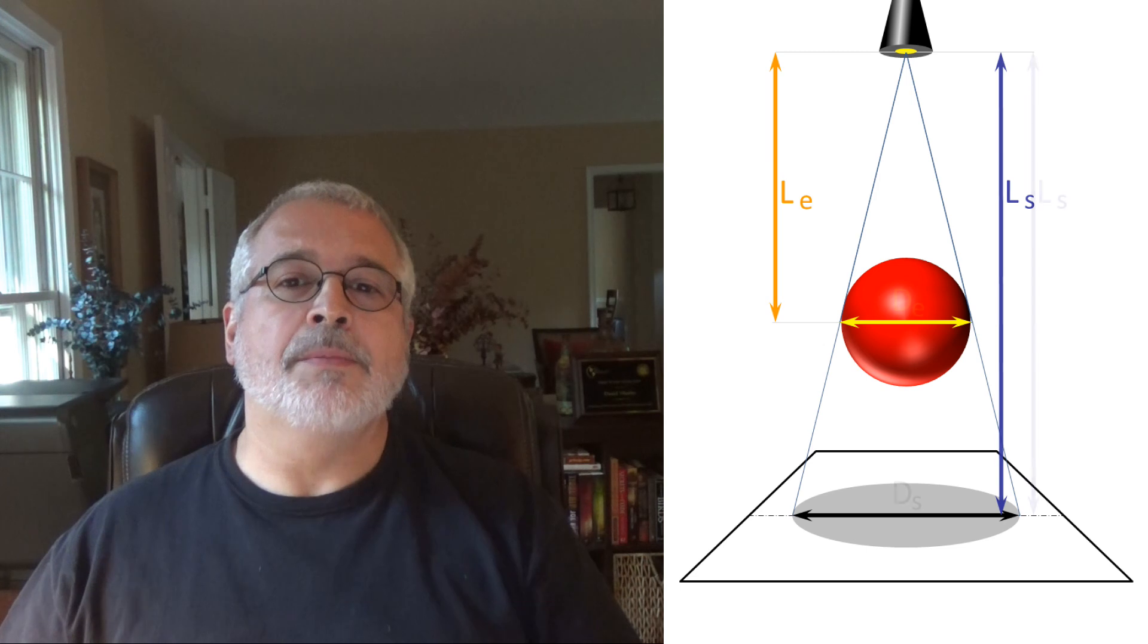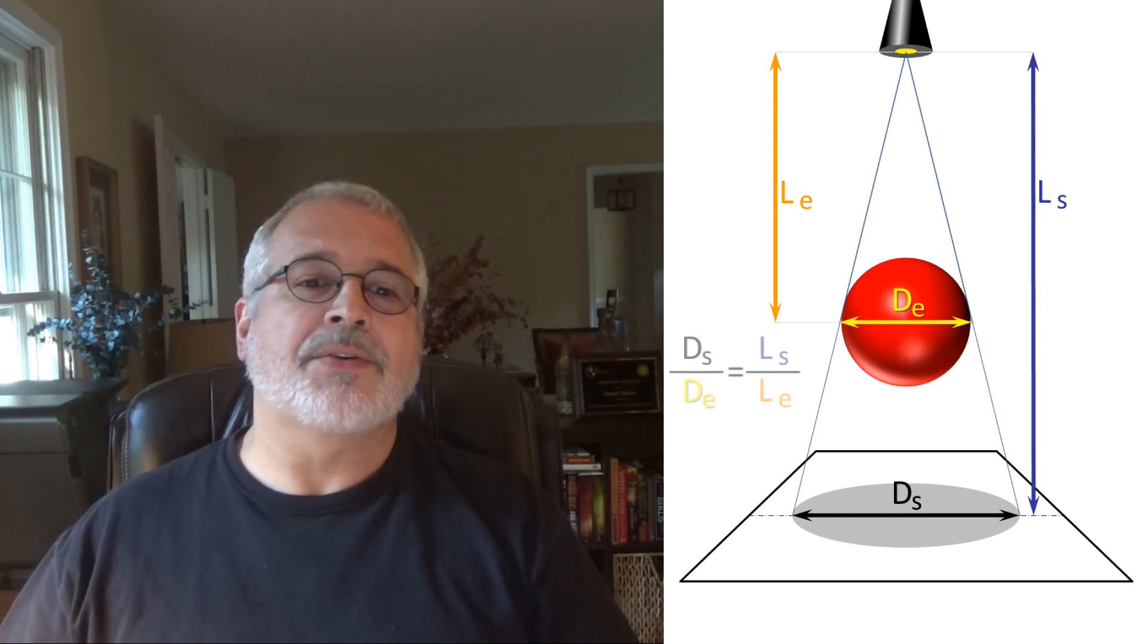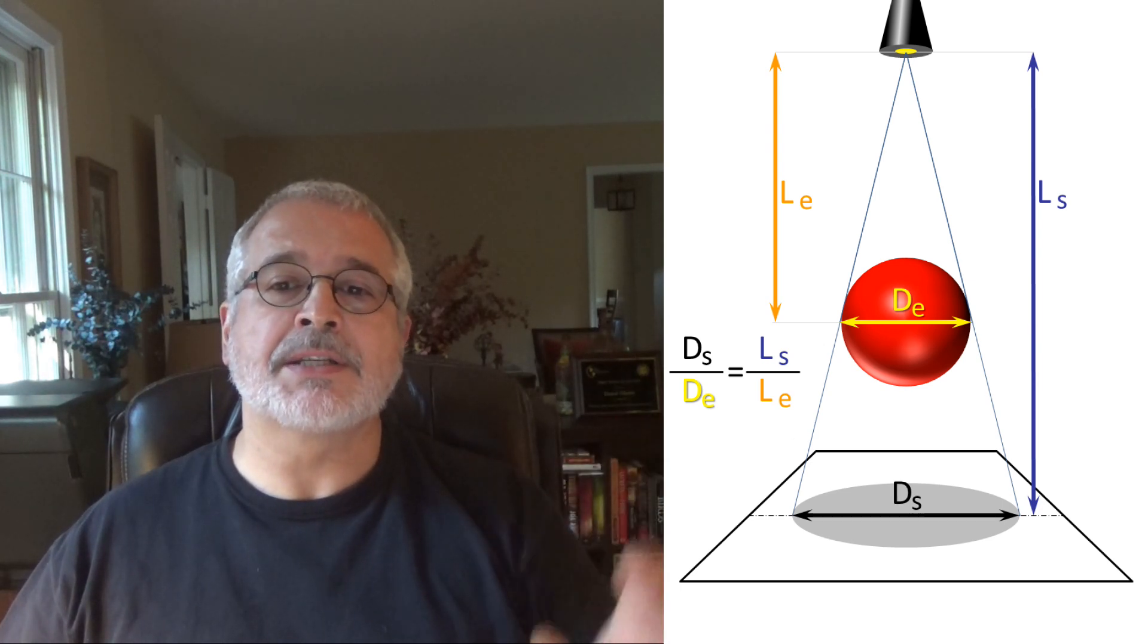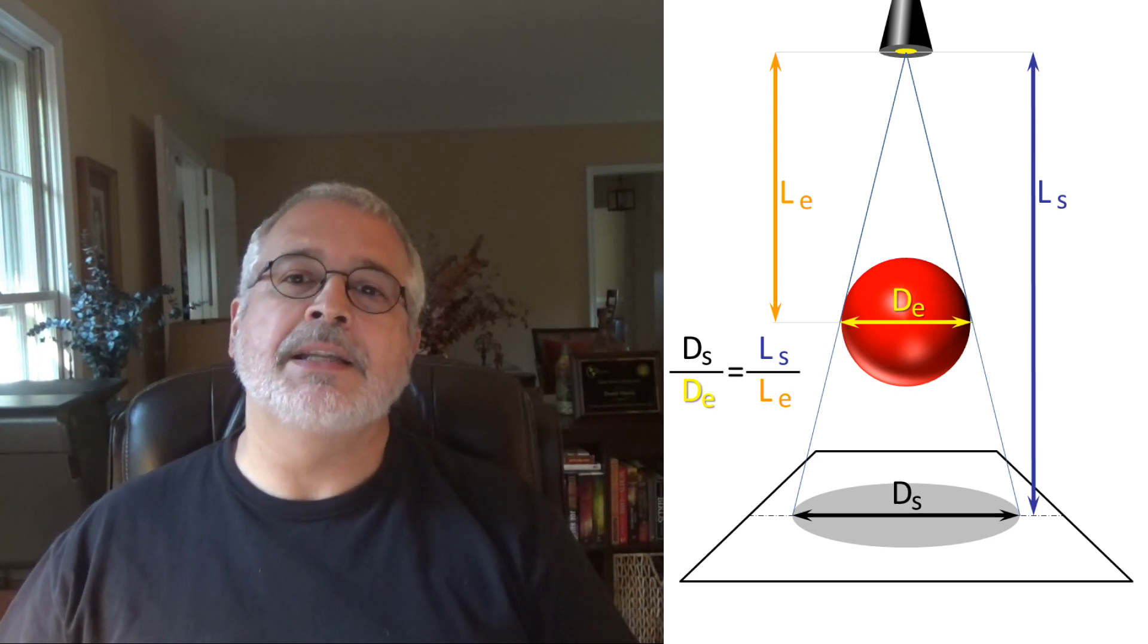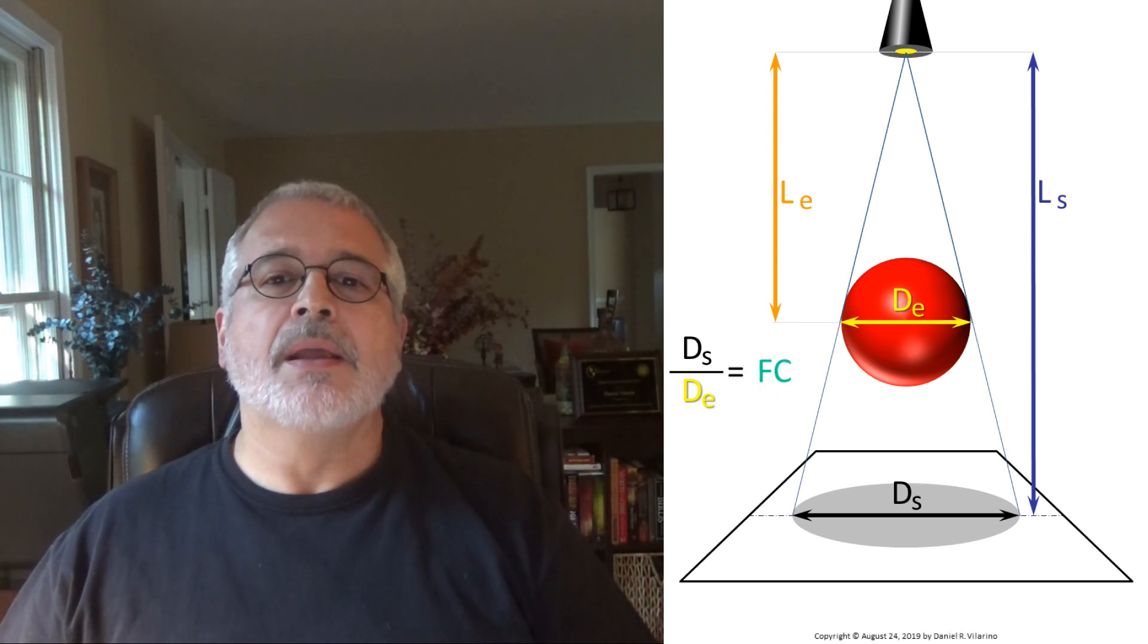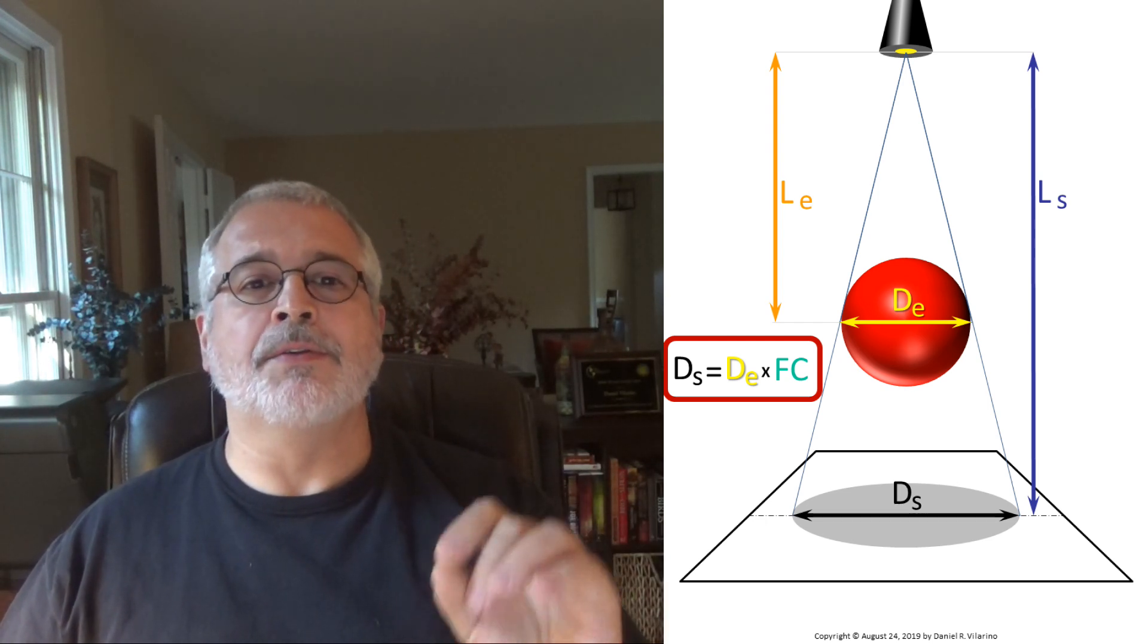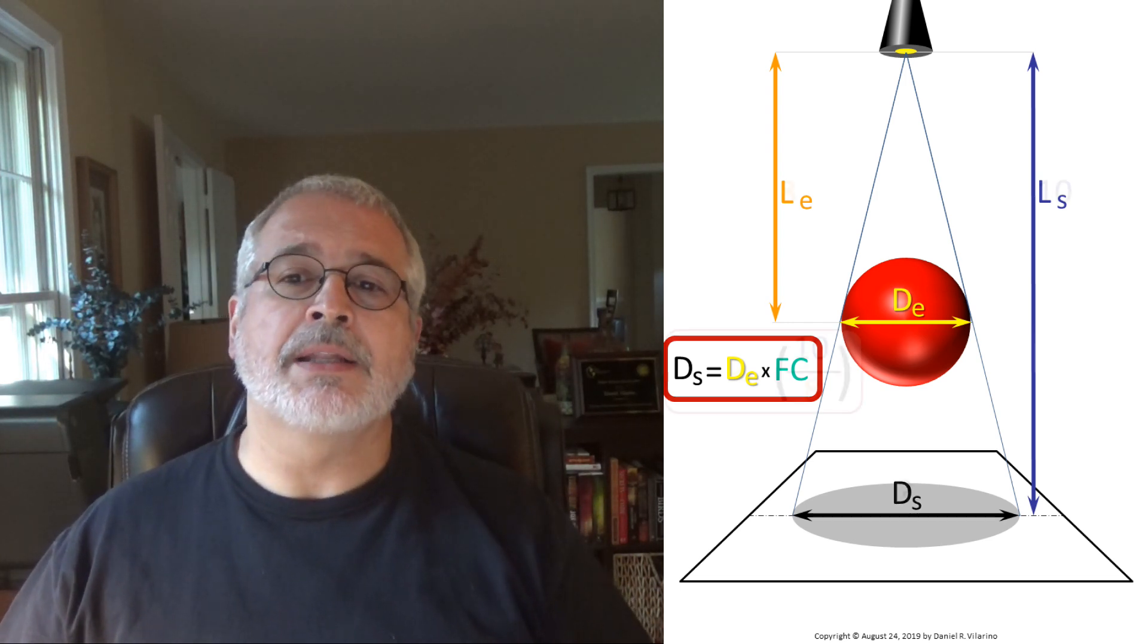The intercept theorem, also known as the Thales basic proportionality theorem, says that the ratio between the longest distance and the shortest distance is the same as the ratio between the shadow diameter, which is the largest, and the sphere diameter, which is the smallest. To the ratio of LS divided by LE, we can give the name of correction factor, FC. And if we multiply the diameter of the sphere that we want to turn by the correction factor, we get the diameter of the circumference that we need as a template to turn the sphere we want. In other words, we get DS.